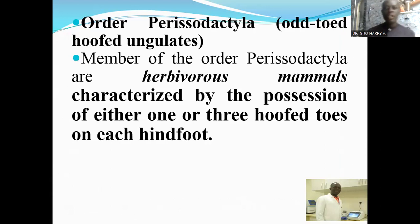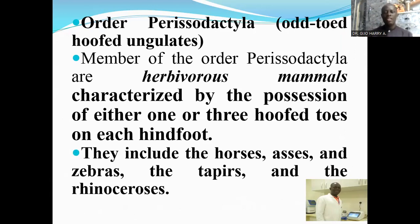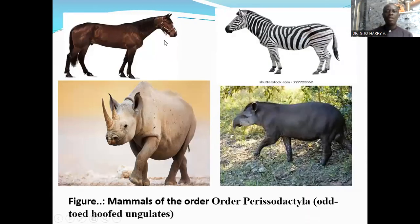The next order is the order Perissodactyla, which consists of the odd-toed hoofed ungulates. Members of the order Perissodactyla are herbivorous mammals characterized by possession of either one or three hoofed toes on each hind foot. They include the horses, asses, and zebras, the tapirs, and the rhinoceroses. These are typical examples of the odd-toed hoofed ungulates in the order Perissodactyla.